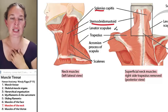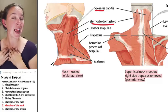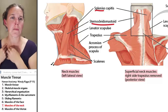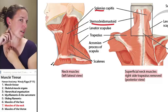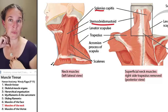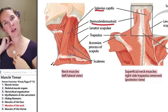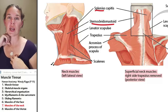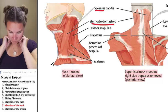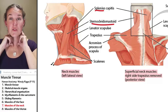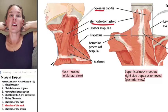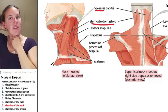Sternocleidomastoid attaches on the anterior surface — it attaches to the clavicle, and it has a belly that also attaches to the sternum. That muscle is actually very visible. You can actually put your fingers on the attachments and shorten them to see what kind of action you get. This is a great time to talk about the fact that muscles come in antagonistic pairs. Contracting both sternocleidomastoids gives a different action than contracting both splenii — therefore, those are pairs of muscles that do antagonistic actions.